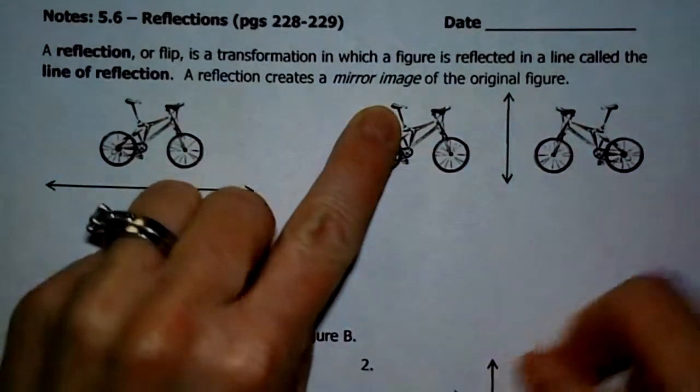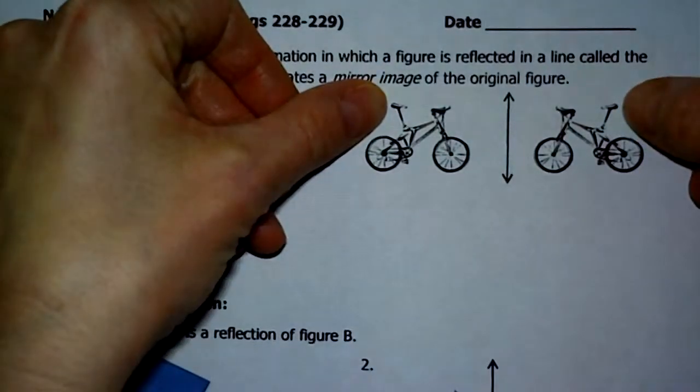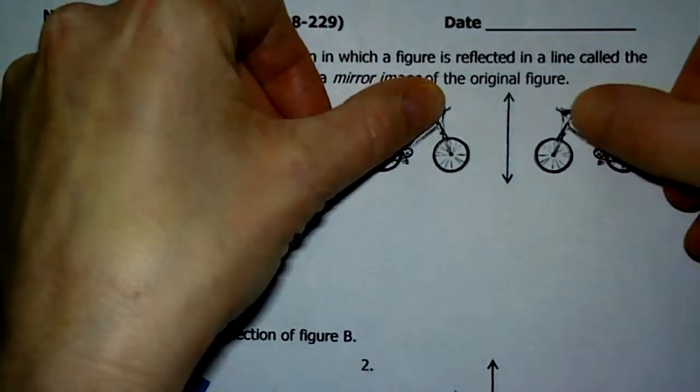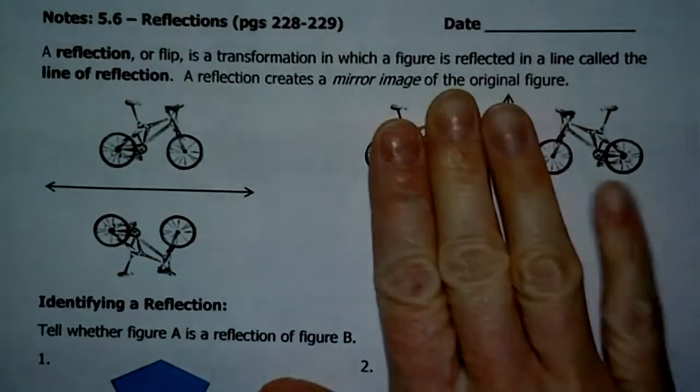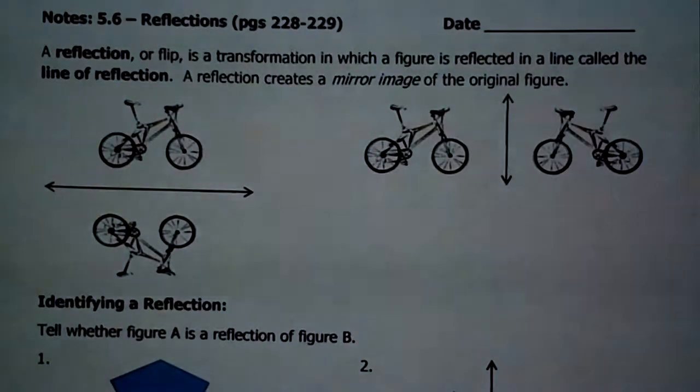So here's the seat right here and here's the seat here. Here are the handlebars and here are the handlebars. They're facing one another. So it's way different than a slide. So we're flipping that thing right over.